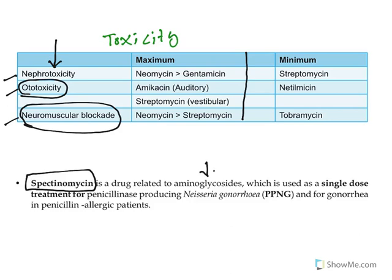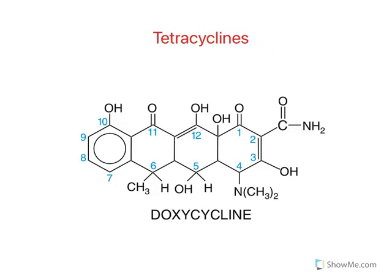There is a note about spectinomycin — a drug related to aminoglycosides with a similar mechanism of action. Its major use is as a single-dose treatment for Neisseria gonorrhoeae. Penicillins are used to treat gonorrhea, but certain Neisseria gonorrhoeae strains produce penicillinase, making penicillin ineffective. In that case, spectinomycin is the drug of choice.